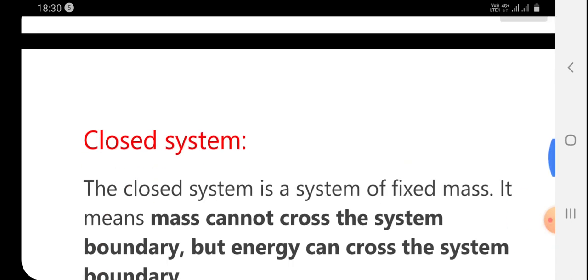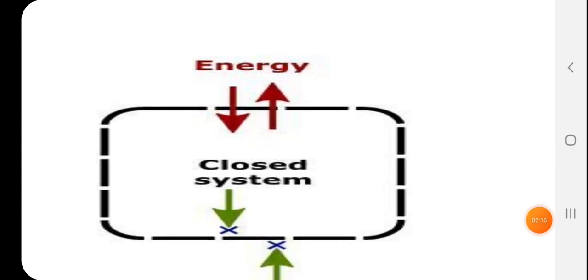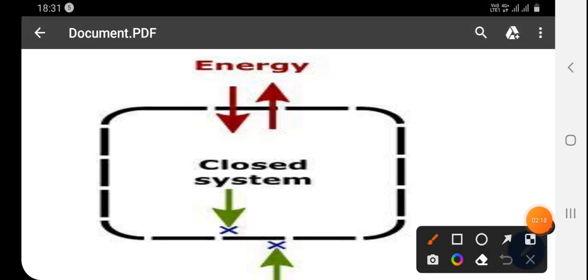The closed system is a system of fixed mass. This means mass cannot cross the system boundary, but energy can cross the system boundary — energy can come in and go out.